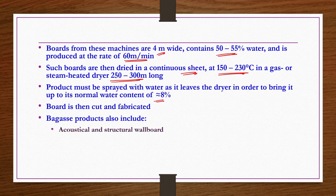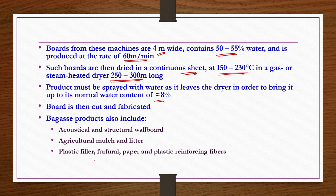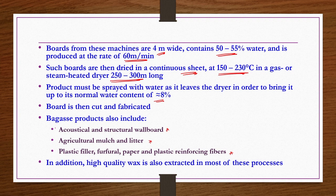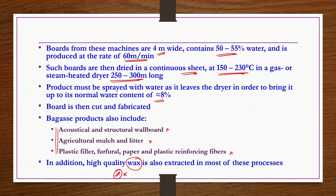Bagasse products also include acoustic and structural wallboard, agricultural mulch and litter, plastic filler, paper reinforcing fibers, and plastic reinforcing fibers. In addition, when bagasse from sugarcane is processed in the sugar industry, it is possible to obtain high-quality wax — an important component also seen in the oils and fats industry.